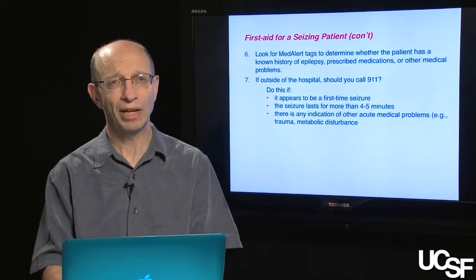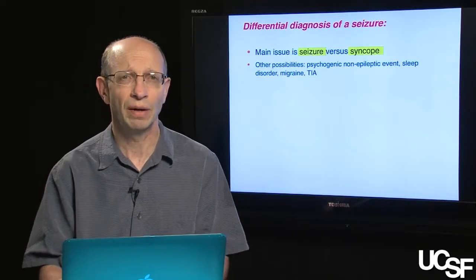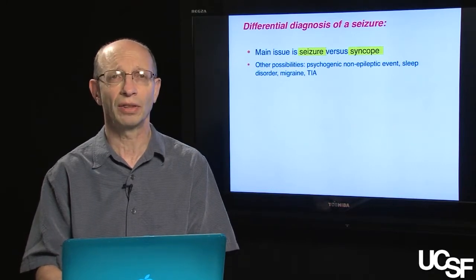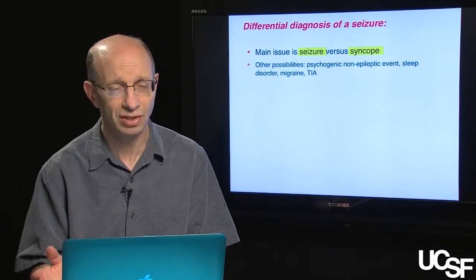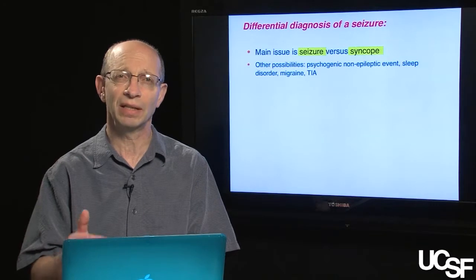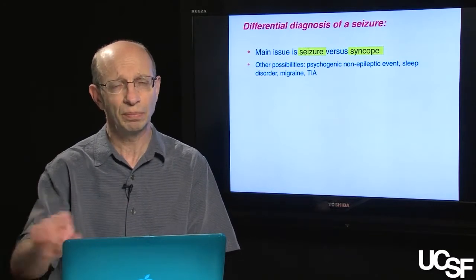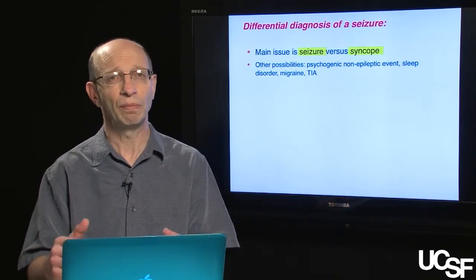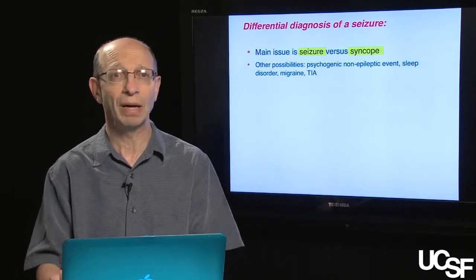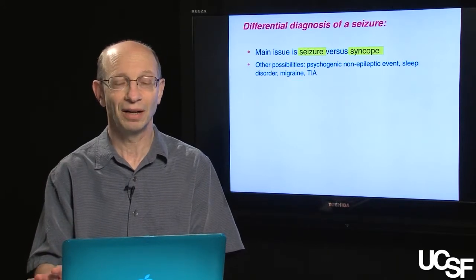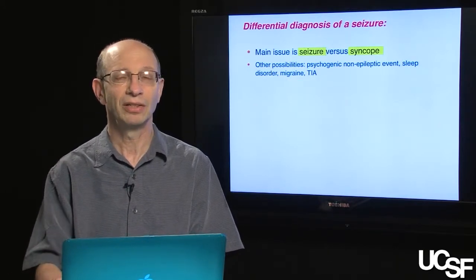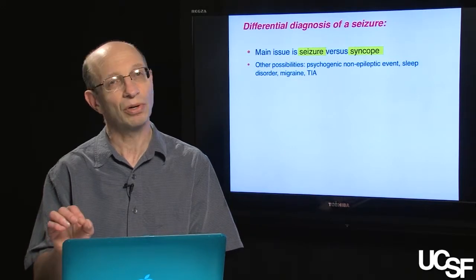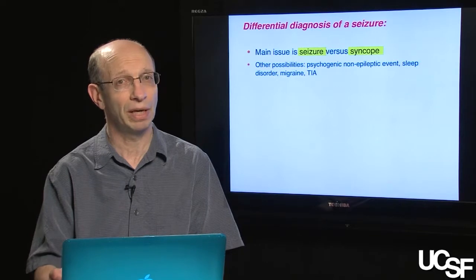Now let's turn to the circumstance where a patient is brought to the hospital because of a concern of possibly having a seizure. I'd like to focus primarily on the question of whether the patient had a generalized seizure. A patient has been observed to collapse to the ground, may or may not be completely unconscious, and has had motor movements suggestive of a seizure. This is a very common scenario that presents to the emergency room, and the main differential diagnosis issue is whether the person had a seizure or had syncope — a fainting spell.